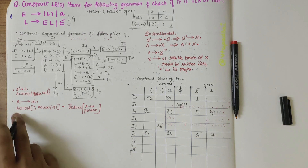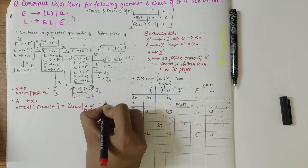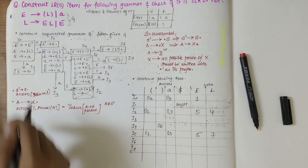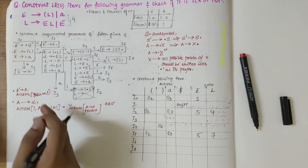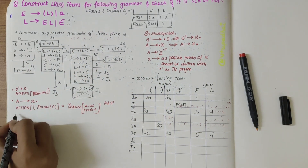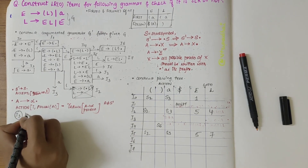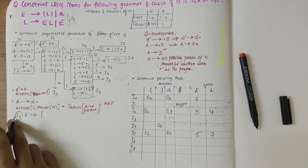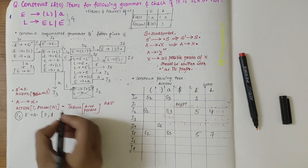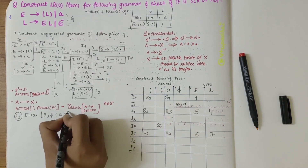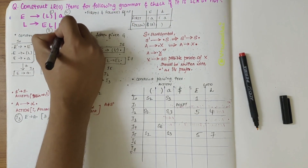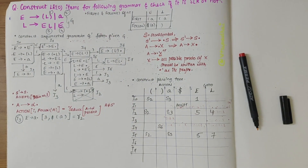Starting from I3: the production is E derives A dot. We write action of 3 comma follow of E, which is dollar, open bracket, A, and close bracket, equals reduce of E derives A — the second production — so R2. I4 cannot be written. I5 also has nothing of the form A derives alpha dot. For I6: E derives parenthesized L followed by dot. Action of 6 comma follow of E — dollar, open bracket, A, close bracket — equals reduce of E derives parenthesized L, which is the first production, so R1. For I7: L derives E L dot. Action of 7 comma follow of L — close bracket — equals reduce of L derives EL, the third production, so R3.